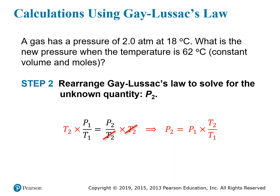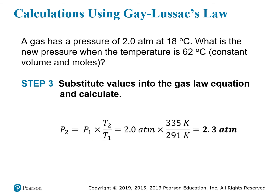Rearranging Gay-Lussac's Law to solve for P2, we multiply both sides by T2. Plugging in: P1 is 2 atmospheres, T1 is 291 K, T2 is 335 K. The Kelvin units cancel, leaving us with an answer of 2.3 atmospheres.